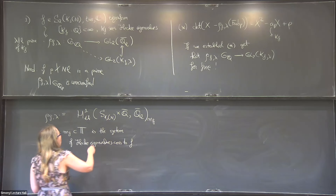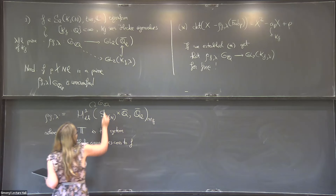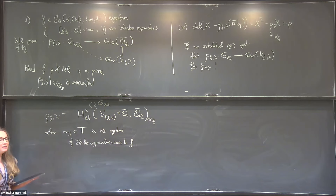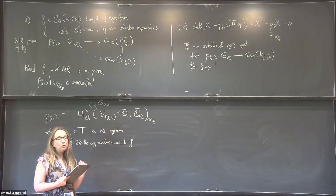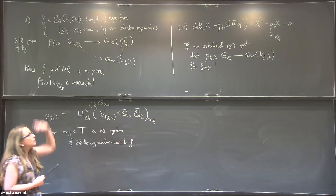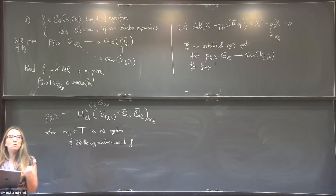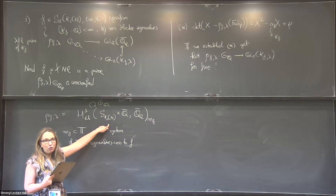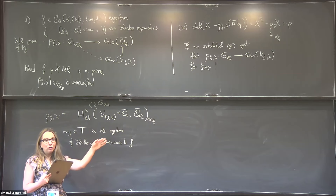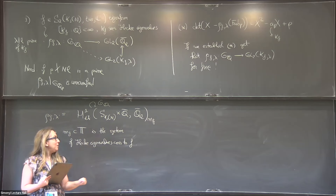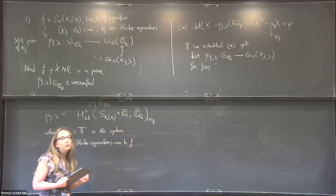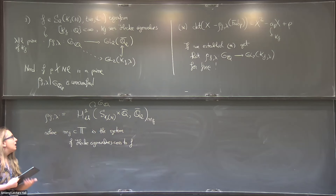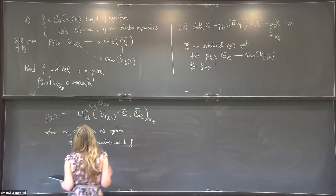The fact that we have étale cohomology gives us a Galois representation. The Eichler-Shimura isomorphism tells us that if we start out with a cusp form that's an eigenform, then this space is two-dimensional. So it's looking good, but we need to understand what happens when we restrict to the decomposition group at a prime P. This prime P is a nice prime because it doesn't divide the level of the modular curve, so we have a nice smooth modular curve even over Z_P, and it doesn't divide the characteristic of the residue field.